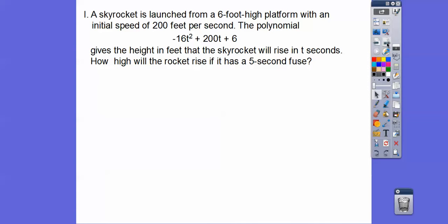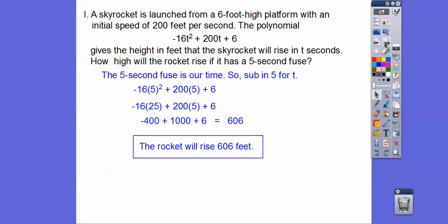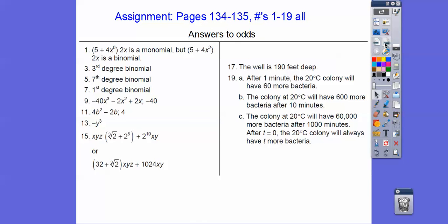Here's an application: a skyrocket is launched from a 6-foot high platform with an initial speed of 200 feet per second. This polynomial gives the height in feet the skyrocket will rise in t seconds. How high will the rocket rise with a 5-second fuse? We substitute 5 for t. Do the exponent first: 5 squared is 25. Then multiplication: negative 16 times 25 is negative 400, and 200 times 5 is 1,000. Adding left to right: negative 400 plus 1,000 is 600, plus 6 is 606. The rocket will rise to 606 feet. If you're in our class, that's your assignment — here are your answers, you'll have to pause. Take care.